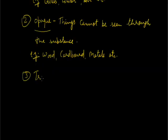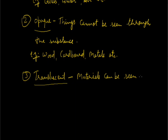Translucent material. Materials through which objects can be seen but not clearly are known as translucent. The examples of translucent materials are some plastics and oil-soaked paper.